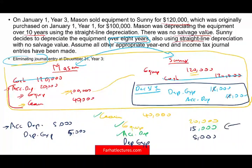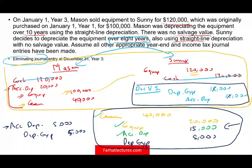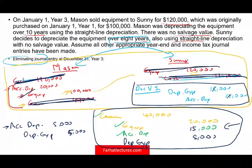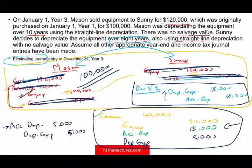That's the entry they're looking for on the exam — the eliminating entries between those two transactions. The gain is gone, the equipment is back to $100,000, the cash is technically gone, accumulated depreciation is restored. We credited accumulated depreciation $20,000 initially, then debited $5,000, so accumulated depreciation is back to $15,000. Everything is back to as if the asset is still on Mason's books for $100,000. This is what we do when preparing eliminating entries for a depreciable asset — fix all entries to go back to the original asset status.